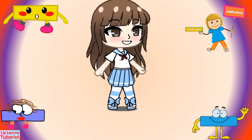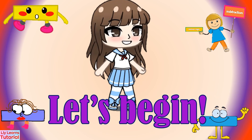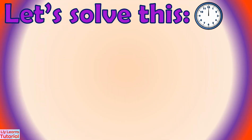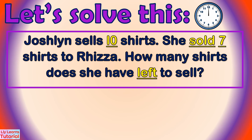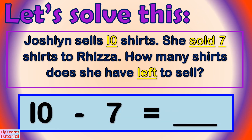Now that you know how to solve subtraction word problems, it's your turn to solve the following. You may pause the video if you need more time. Let's begin! Jocelyn sells 10 shirts. She sold 7 shirts to Riza. How many shirts did she have left to sell? 10 minus 7 is equal to 3.